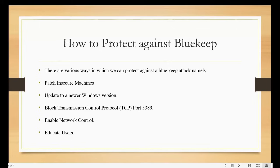Updating to a newer Windows version: BlueKeep affects Windows versions up to Windows 7, from Windows XP to Windows 7. Automatically updating to a version newer than Windows 7 — such as Windows 8, Windows 8.1, Windows 10, or Windows 11 — will guarantee protection for your system. Regarding blocking TCP on port 3389: since port 3389 is used to initiate an RDP session, blocking it at an enterprise perimeter firewall will prevent attackers from exploiting BlueKeep from outside the user's network. Keep in mind that this will also block legitimate RDP sessions and may not prevent unauthenticated connections initiated from inside the network.